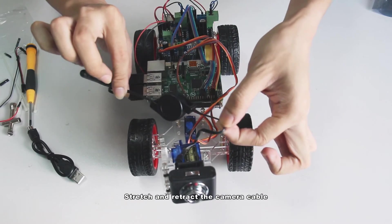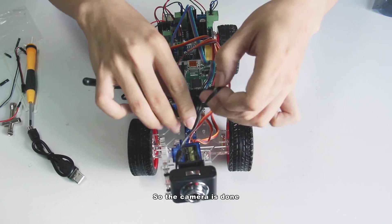Try to turn the pan and tilt servos and see whether the camera can film in the largest coverage. Stretch and retract the camera cable. So the camera is done.